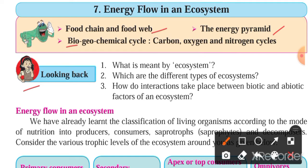Question number two: what are the different types of ecosystems? There are two types of ecosystems. Number one is aquatic ecosystem — the ecosystem found in water. Number two is terrestrial ecosystem — meaning land ecosystem.